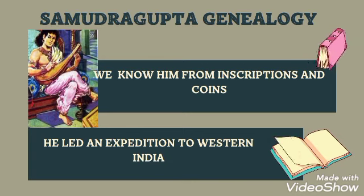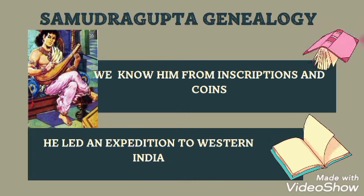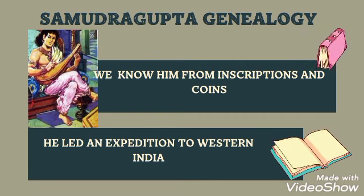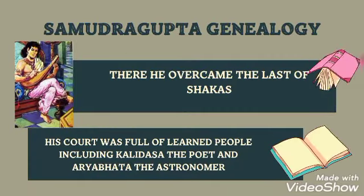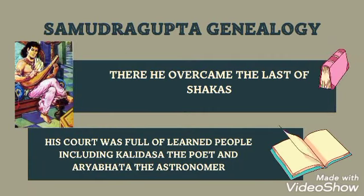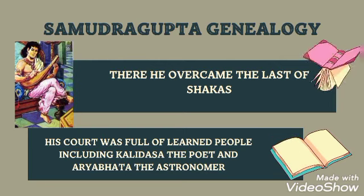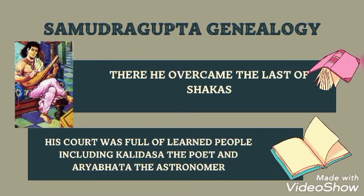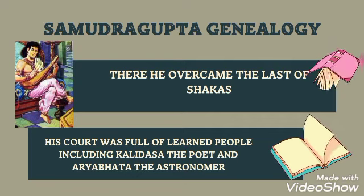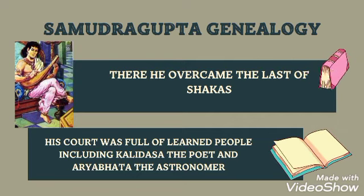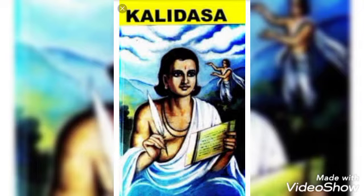Samudra Gupta led an expedition to western India, where he overcame the last of the Shakas. His court was full of learned people, which included the poet Kalidasa and Aryabhata the astronomer. Here is a picture of poet Kalidasa.